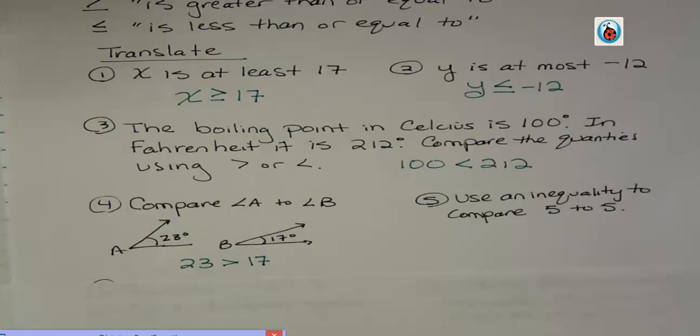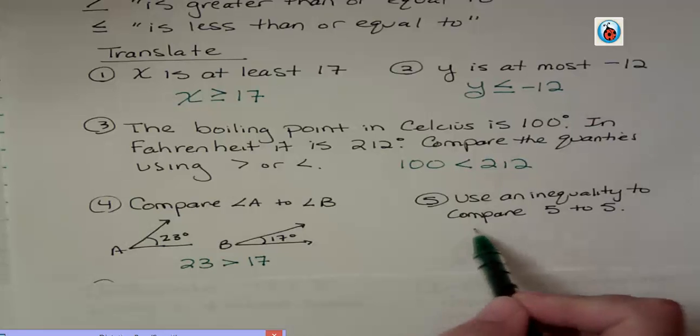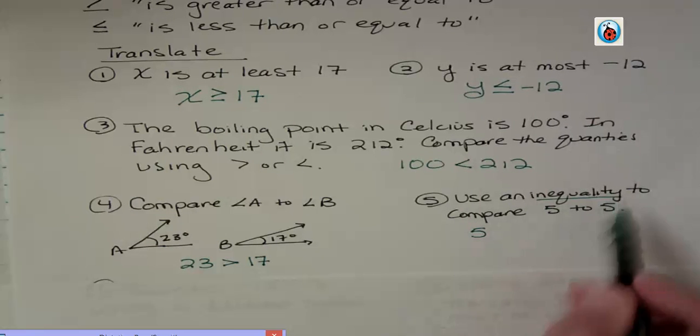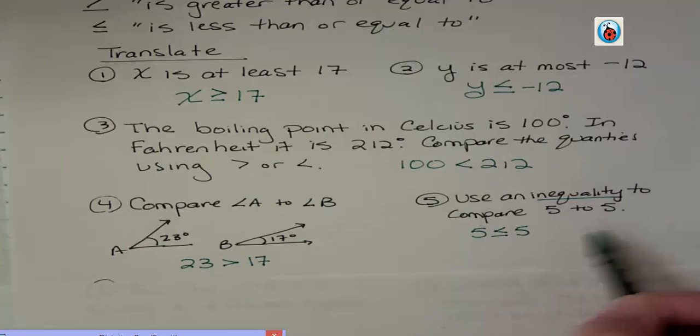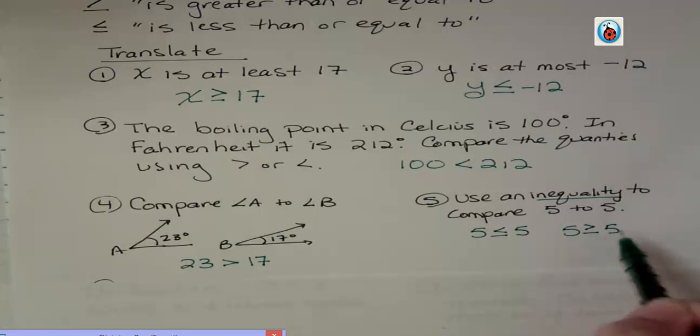Now number 5 says use an inequality to compare 5 to 5. Well, I could, it says an inequality. I know that they're equal, but I could say it's equal to or less than, or I could say it's greater than or equal to. Those are both true, so either one of those could be possible.